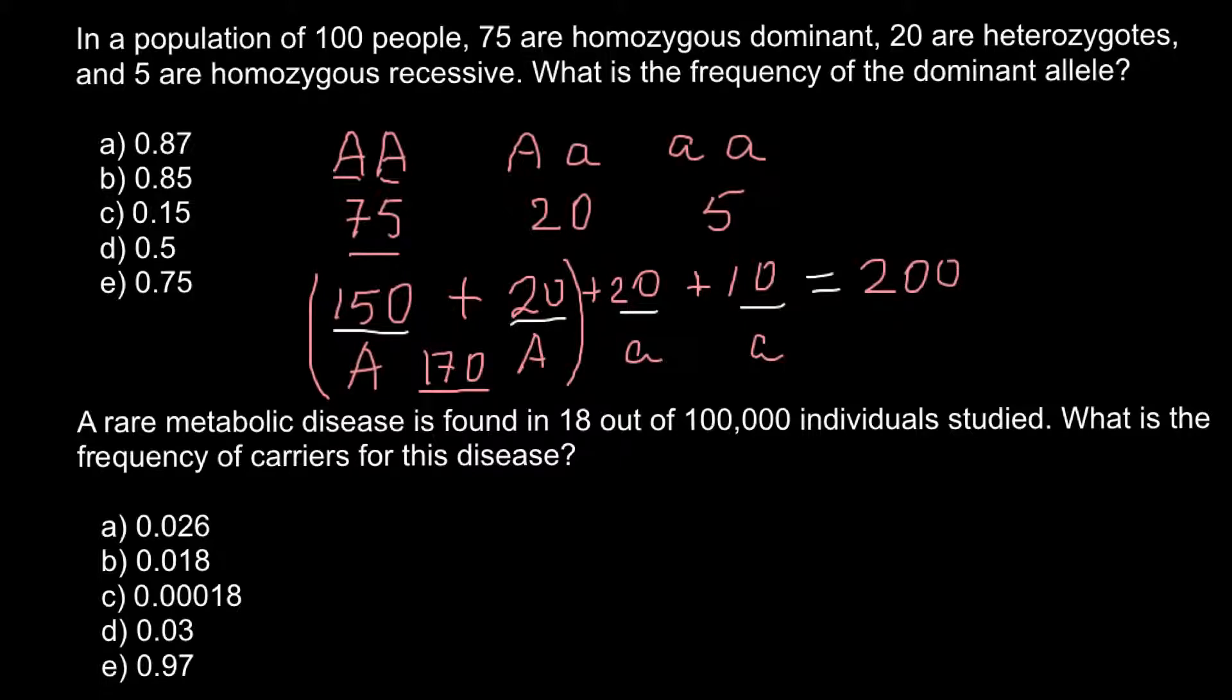So as you see, 170 out of 200 is allele capital A. So in order to find its frequency, we just have to divide this number, 170 by 200. And the answer here would be 0.85.